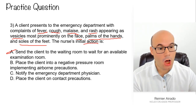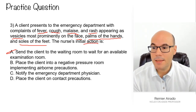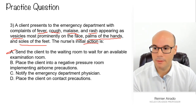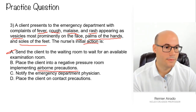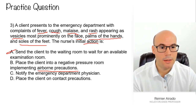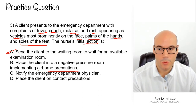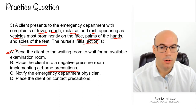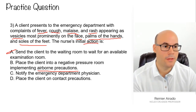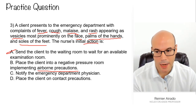A and B are opposite to each other. B says place the client in negative pressure and implement airborne precaution. This is very important — it's opposite to A. A says do not put the patient in any type of precaution; send them back to the waiting room. B says no, we have to use some kind of precaution and prevent further transmission of the disease. So B — airborne precaution.